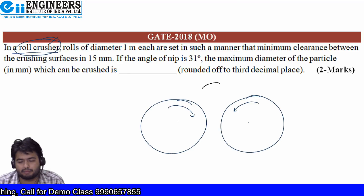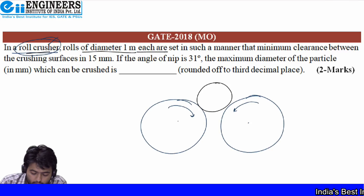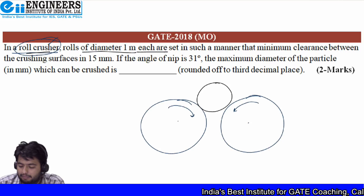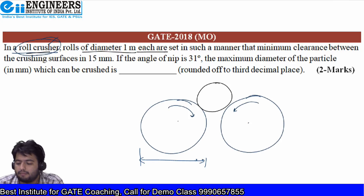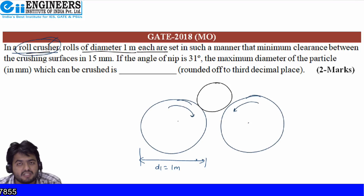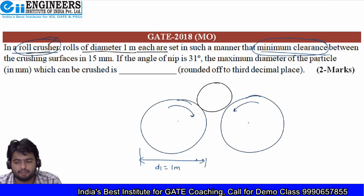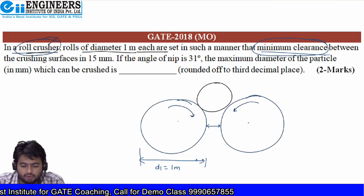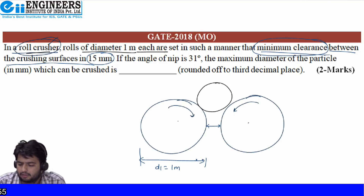We have a roll crusher where the diameter of rolls is 1 meter each — so D1 = 1 meter. The rolls are set such that the minimum clearance — the minimum distance between the two crushing surfaces — is 15 mm. Let's take this as D3 = 15 mm.